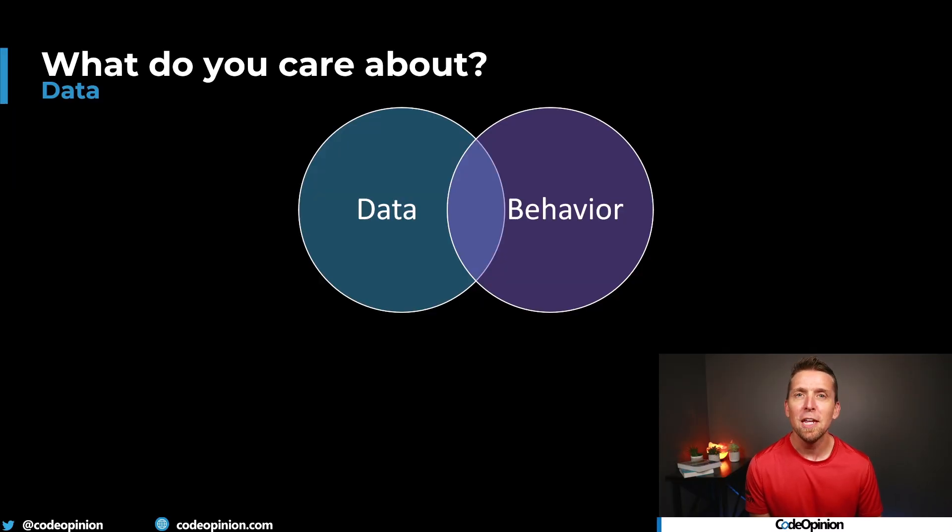Here's a quick Venn diagram. If you're thinking about a domain model, what do you actually care about? Well, you care about behavior and data. Well, not all data and that's what I'm about to illustrate.